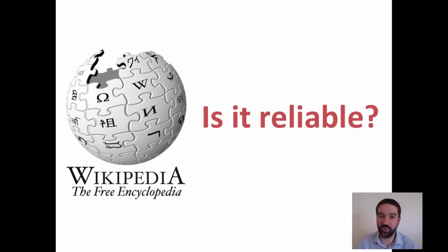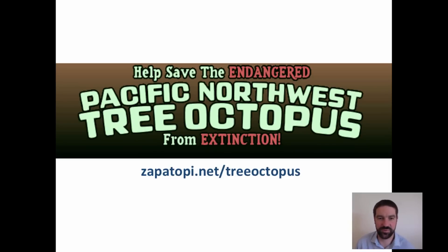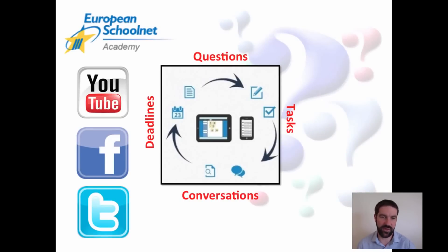One of the most famous websites in the world is of course Wikipedia, and in one of the videos later in the series we're going to have a look at whether we think it's reliable or not. If you're interested in investigating reliability, I suggest you search for the Pacific Northwest Tree Octopus, because I heard it might be nearing extinction — it would be an interesting website for your students to investigate to see whether they think it's reliable or not. What sort of digital skills do you teach your students to become online detectives, and how do we convince them that digital content is not always reliable? They really need to be critical of everything they see, listen to and read online. See you in the next video.